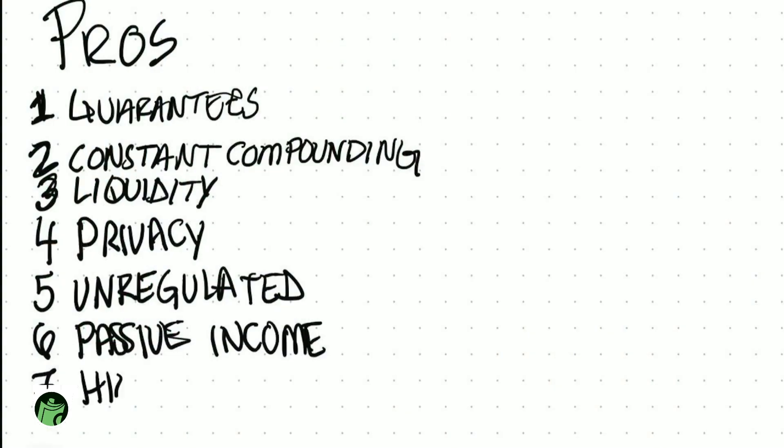Number seven of eight: a high savings rate. I know some of you are thinking you've heard differently about whole life insurance — that's because you're probably comparing it to something else. We are at a high savings rate. These dollars are safe and secure. There are guarantees here, and the savings rate is going to be high, probably in the three-plus percent range, depending on where you've got it, but it's guaranteed. That is way different than your savings account currently. Remember, this is a savings environment.